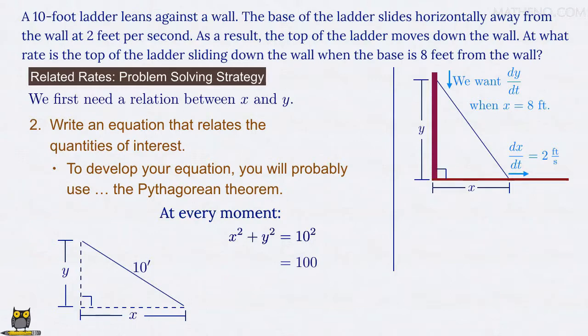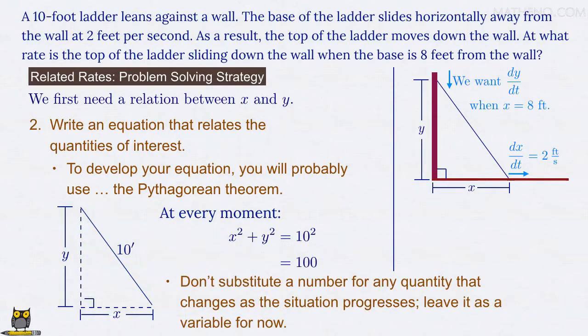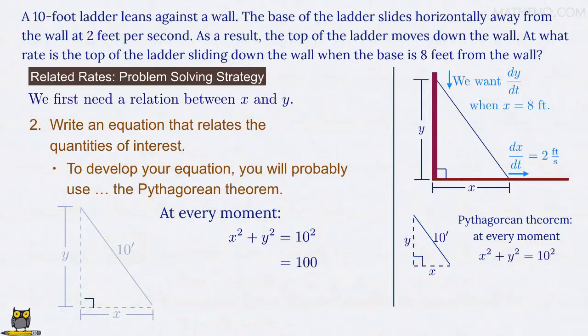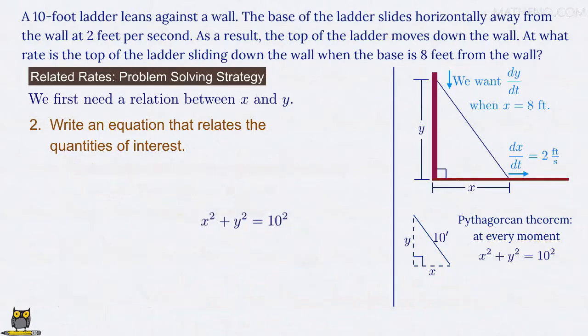A common mistake at this point is to substitute 8 feet for x, but you can't proceed correctly if you do that. Instead, because the location of the ladder's base changes as the ladder slides along the ground, we have to leave x as a variable for now. We'll substitute x equals 8 feet at the end of our solution. By contrast, the ladder's length is always 10 feet, and so we use that as a fixed value in our equation here. And that's it. We now have the relation we need between x and y, and so we're done with the second step of our strategy.